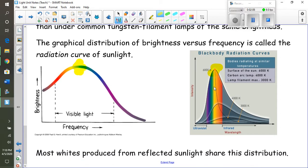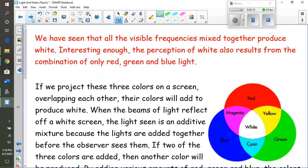So most whites produced from the reflection of the sunlight kind of share this distribution, where it's a little bit stronger in the yellow-green part of the spectrum, which is at the right middle of the spectrum. So we have seen that all visible frequencies mixed together make white.